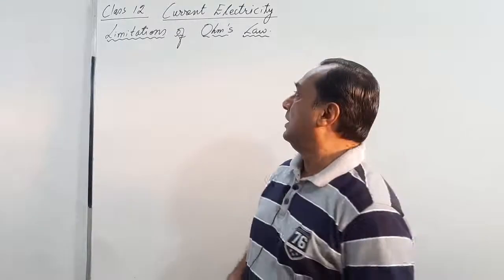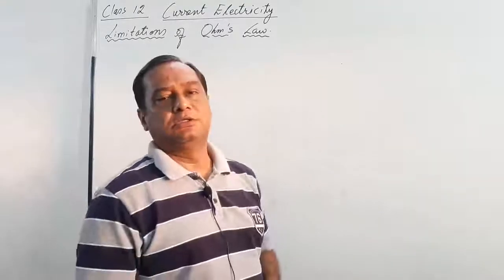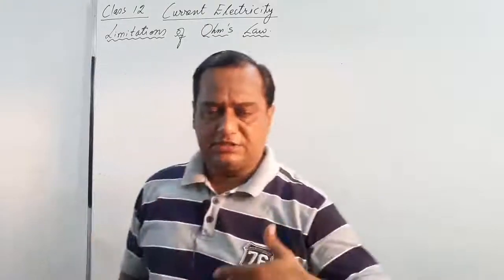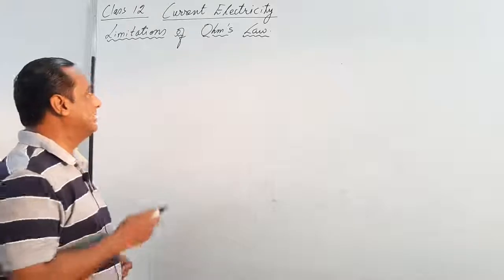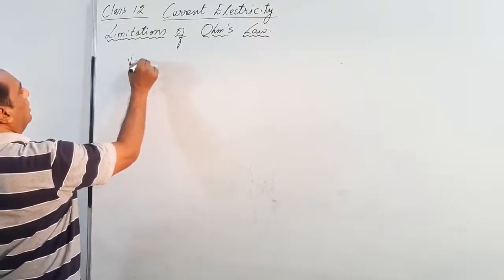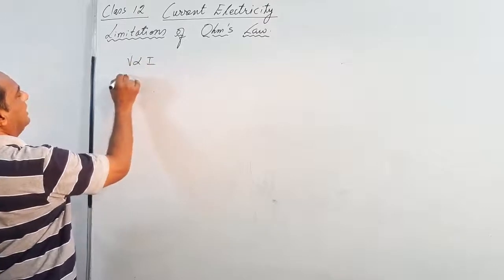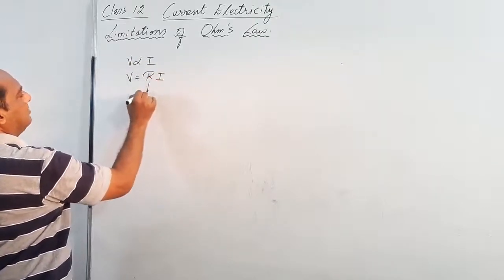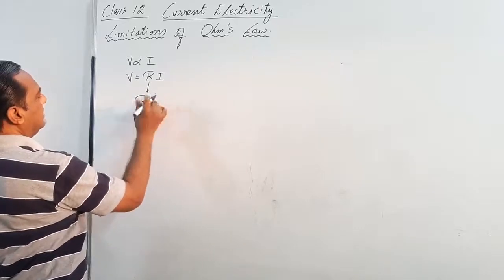Hello students, in this video we are going to study about limitations of Ohm's law. Earlier we have studied about Ohm's law and you know the mathematical statement for Ohm's law: V is proportional to I, so we can write V is equal to R multiplied by I. R is called resistance.